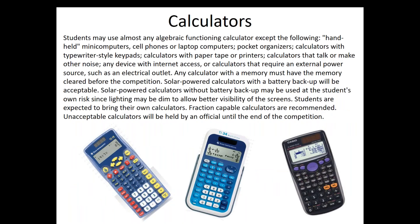Regarding calculators: students can use almost any algebraic functioning calculator except handheld mini computers, cell phones or laptops, pocket organizers, calculators with typewriter-style keypads, calculators with paper tape or printers, calculators that talk or make other noise, any device with Internet access, or calculators that require an external power source such as an electrical outlet. Any calculator with a memory must have the memory cleared before the competition. Solar powered calculators with a battery backup are fine. Solar powered calculators without battery backup may be used at the student's own risk since lighting may be dimmed to allow better visibility of the screens.